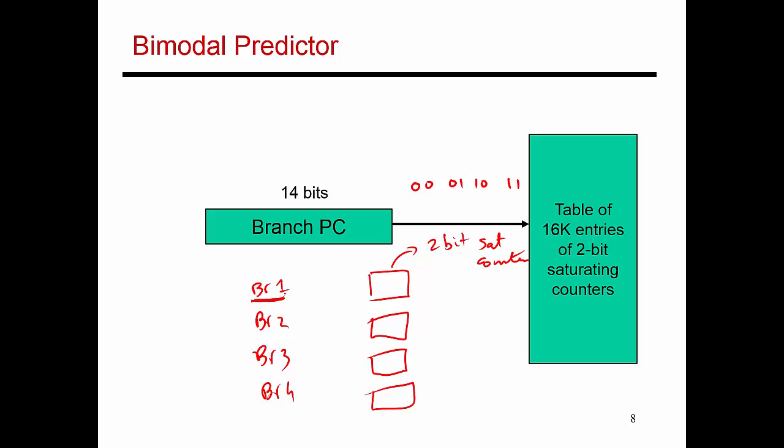Every time branch 1 is taken, I increment its corresponding counter value. Every time branch 1 is not taken, I decrement its corresponding counter value. So when I start out, maybe this has the value 0, 1. Let's just say that's my starting counter value. If branch 1 is taken, then I increment this value and it becomes 1, 0.